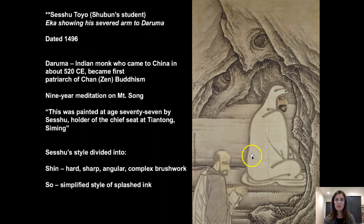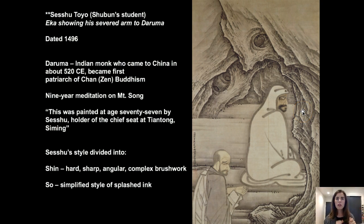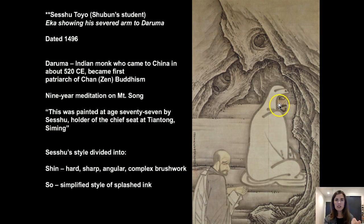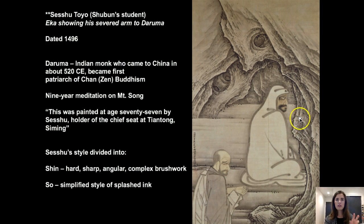Sesshū had two styles. The shin style was harder, sharper, and more angular — visible in the cave wall's jagged marks. The so style was softer and more simplified. You can see the bold brush strokes outlining Daruma and an interest in indicating ethnic difference between Daruma the Indian and Eka the Chinese through their faces and coloring. Overall it's a very distinct and confident style.